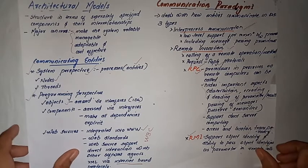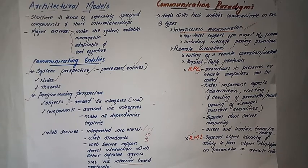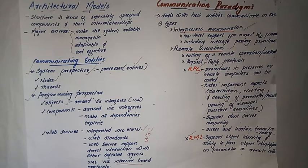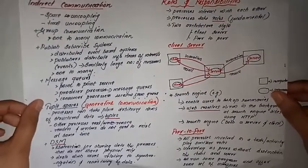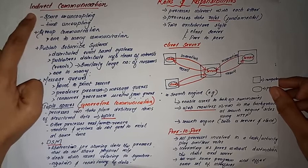The communication paradigm has three types: the first is inter-process communication, the second is remote invocation, and the third is indirect communication.